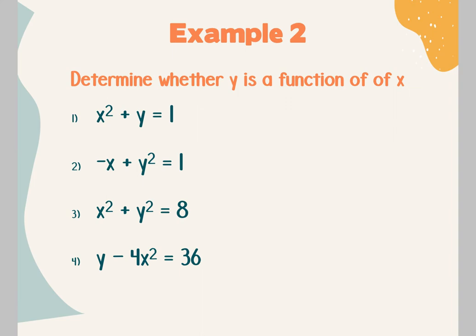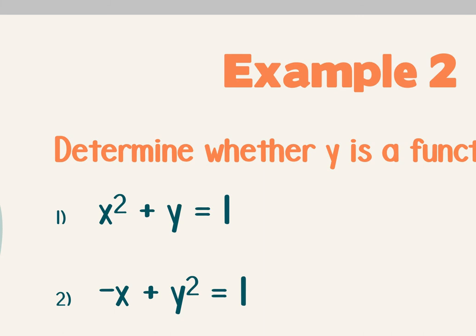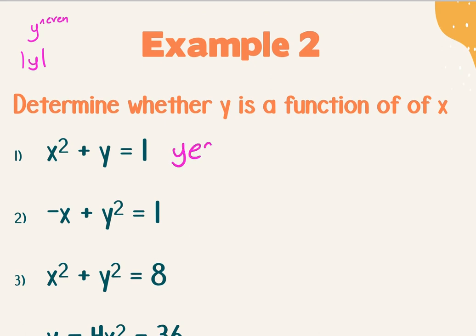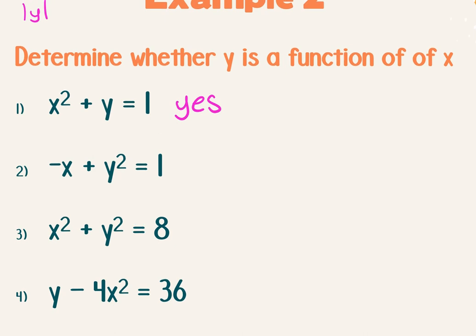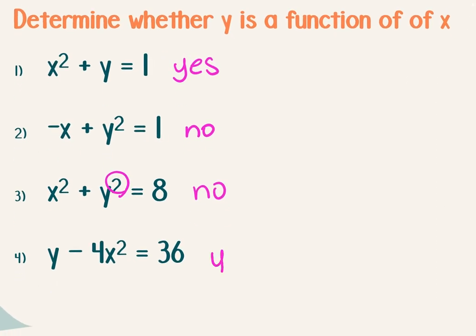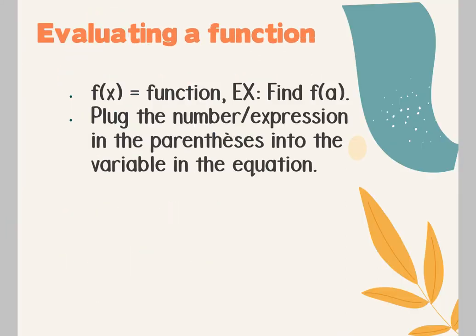From an equation, these should be easy and fast. What makes it not a function? Y raised to an even power, or y in absolute value. In number 1, do you have y raised to an even power or an absolute value? No — so this is a yes, this is a function. Number 2, do you have y raised to an even power or an absolute value? Yes — so this is not a function. Number 3: not a function, that y is raised to an even power. Number 4: yes, the x is raised to an even power but the y is fine. It doesn't have to be just squared — it could be any even number.